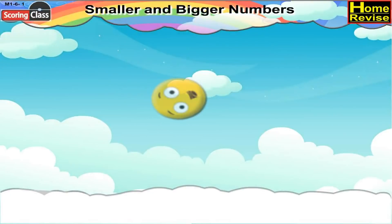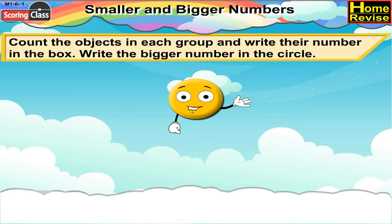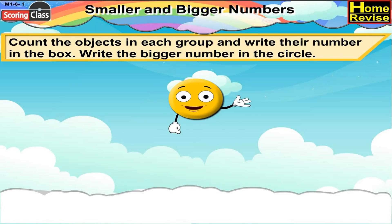Smaller and Bigger Numbers. Count the objects in each group and write their number in the box. Write the bigger number in the circle.